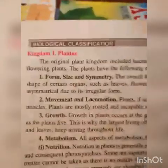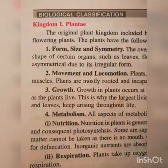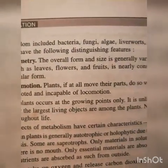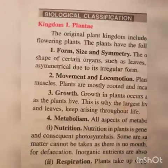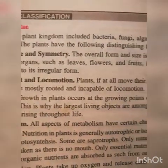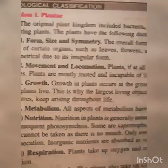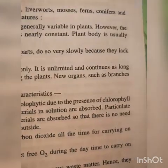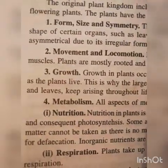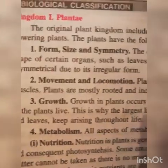Kingdom Plantae: The original plant kingdom includes bacteria, fungi, algae, liverworts, mosses, ferns, conifers, and flowering plants. The plants have the following distinguishing features. Form, size, and symmetry: The overall form and size is generally variable in plants; however, the shape of certain organs such as leaves, flowers, and fruits is nearly constant. Plant body is usually asymmetrical due to its irregular form.